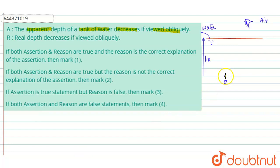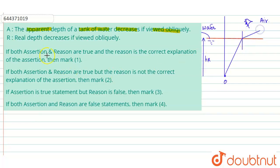We need to locate the image of the object — what will happen if we try to see this object from the air medium. I have taken two rays coming from the object. The first ray falls normally on the surface and passes straight through. The second ray falls obliquely on the water-air surface.